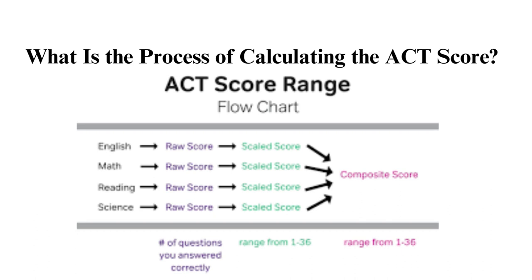Answer all questions even if you don't know the answer. Your score will be calculated separately when you take the writing test. The scale for the writing test is 2 to 12. Your score for this section will not be added to the composite score for the other four sections — the score for the writing test will be recorded separately in the score report. If you are looking for cramming tips when doing the ACT exam, you may want to consider reading the 'how to cram for the final exam' article.